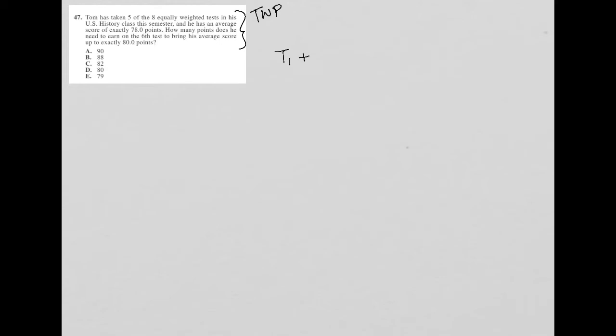So he has taken five tests. So he took T1, T2, T3, T4 plus test, so T stands for test, test five. And if we took all those scores and divided it by five, he would have 78.